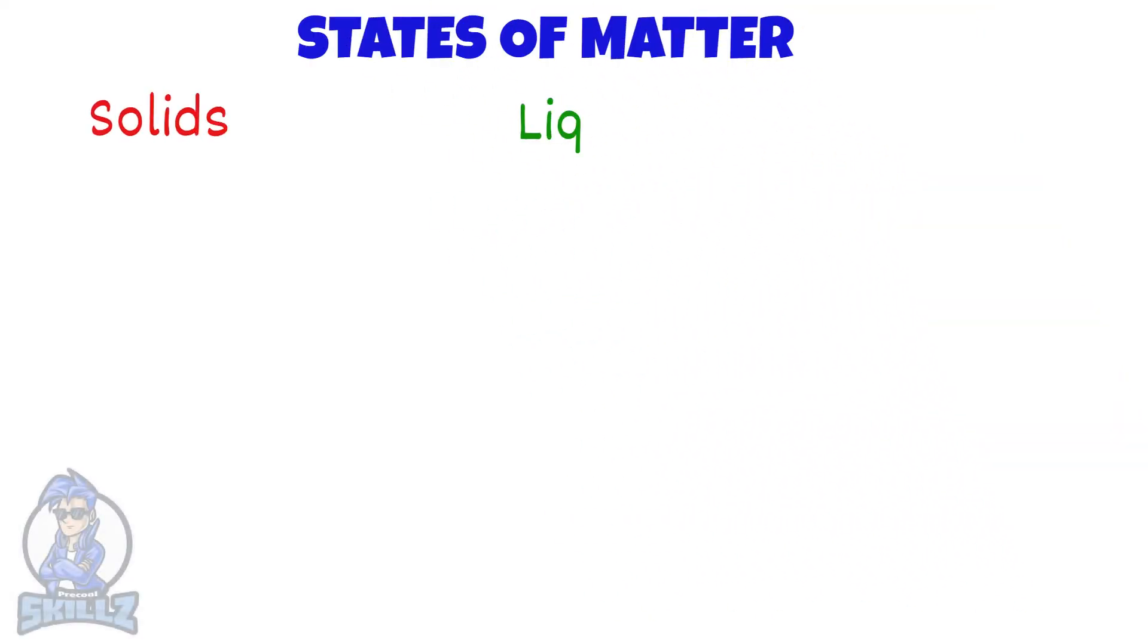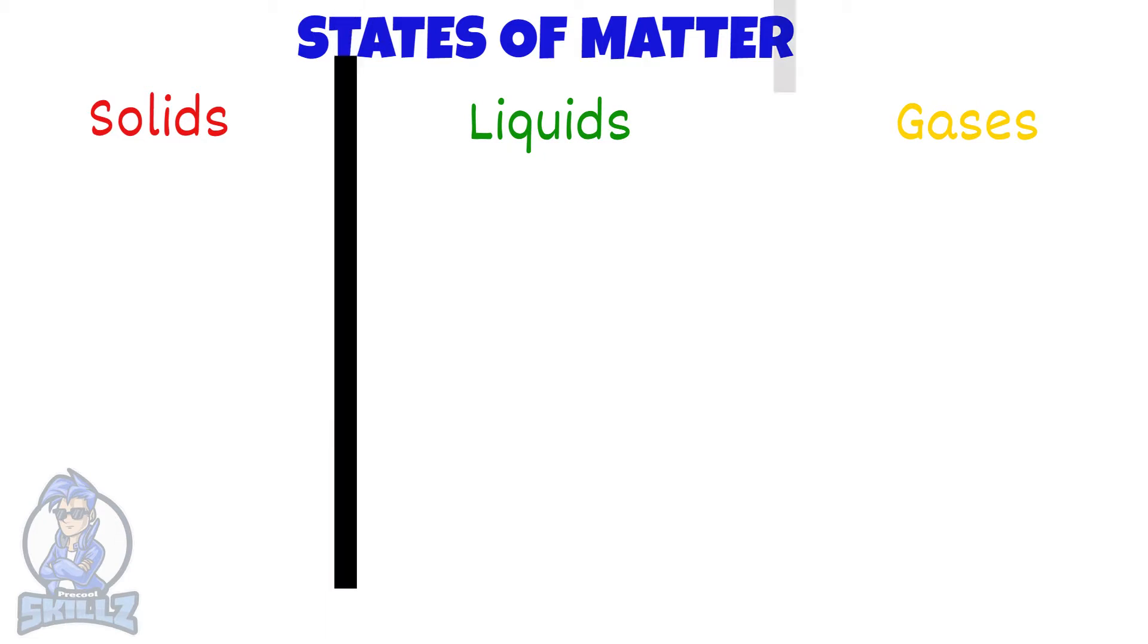We already know that solids, liquids and gases are the three states of matter. Let's look at each of their features.